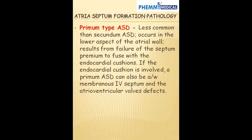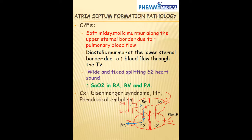The primum type of ASD is less common than the secundum type. It occurs in the lower aspect of the atrial wall and results in failure of the septum primum to fuse with the endocardial cushion. If the endocardial cushion is involved, a primary ASD can also be associated with a membranous interventricular septal defect — because it is the same endocardial cushion that helps form the membranous interventricular septum and also forms our valves — so this patient can also have valvular defects.